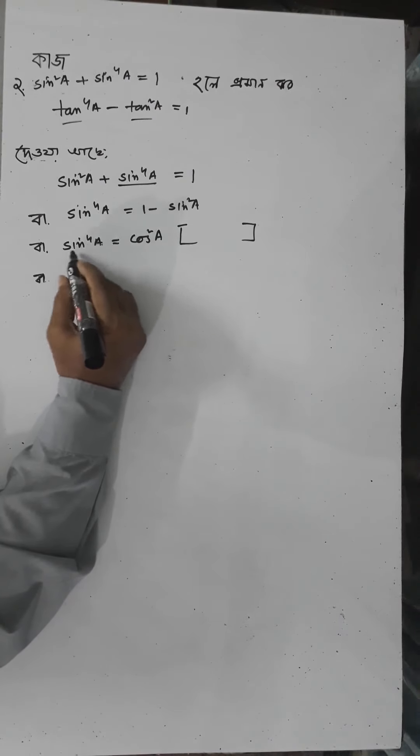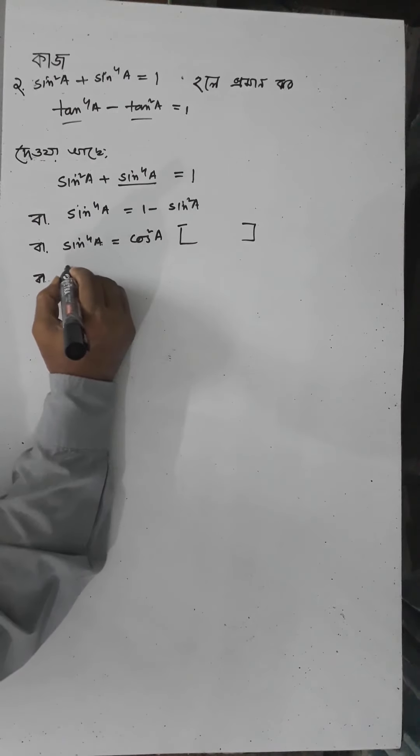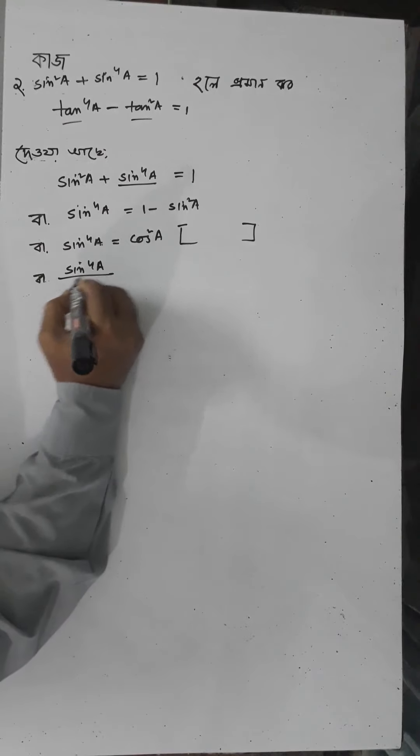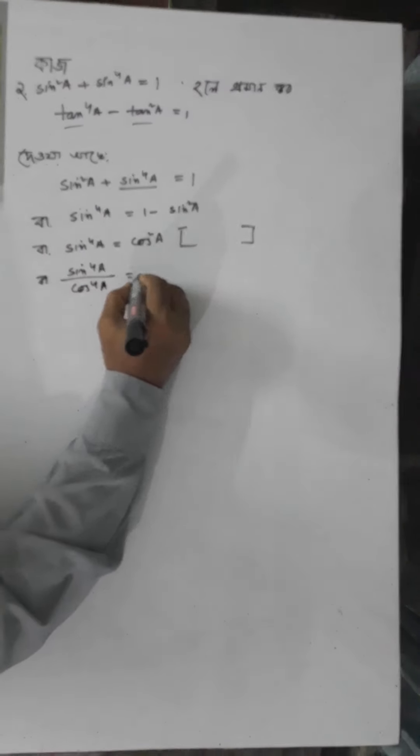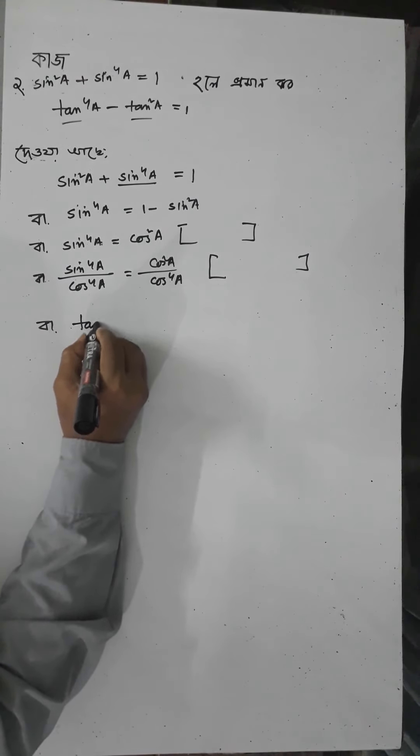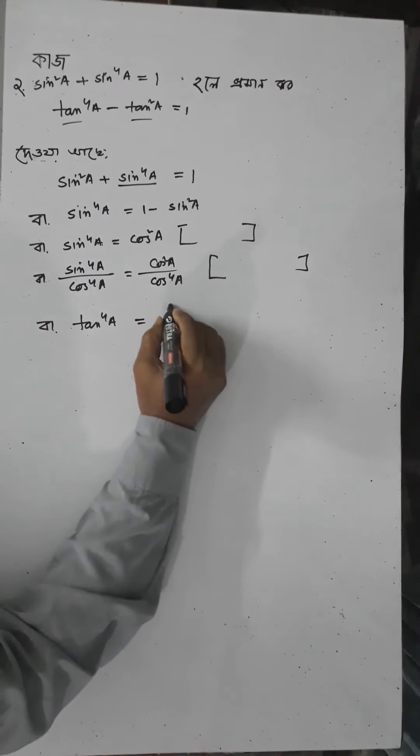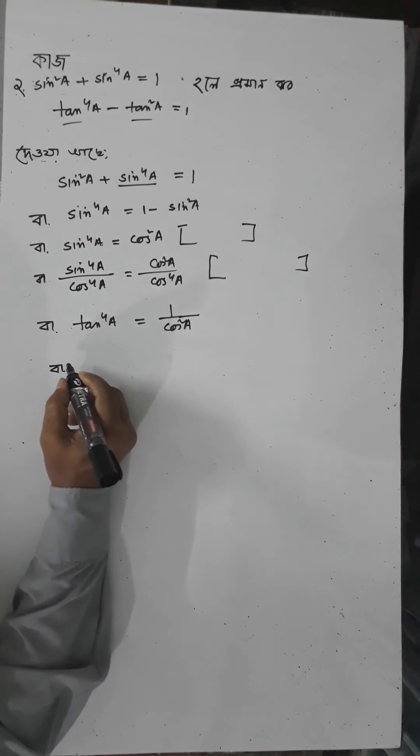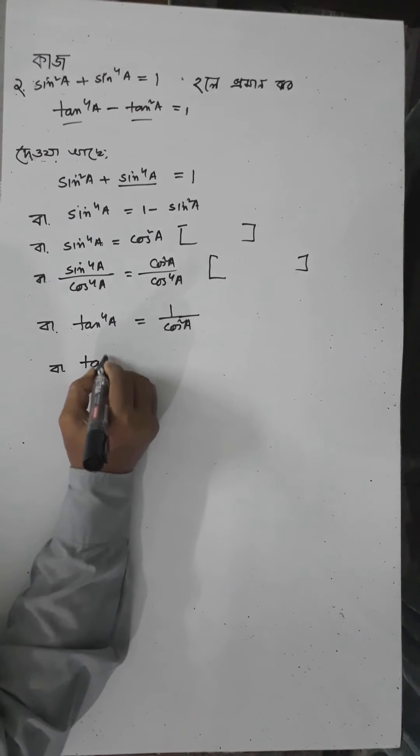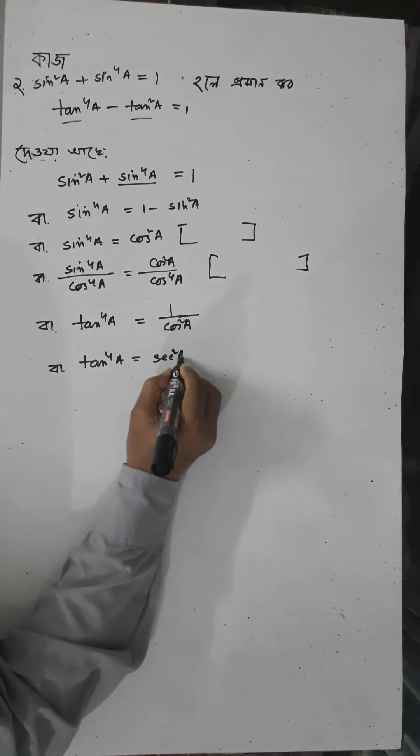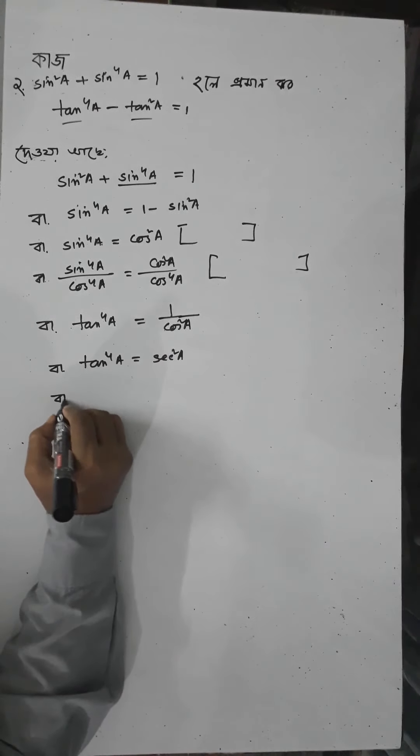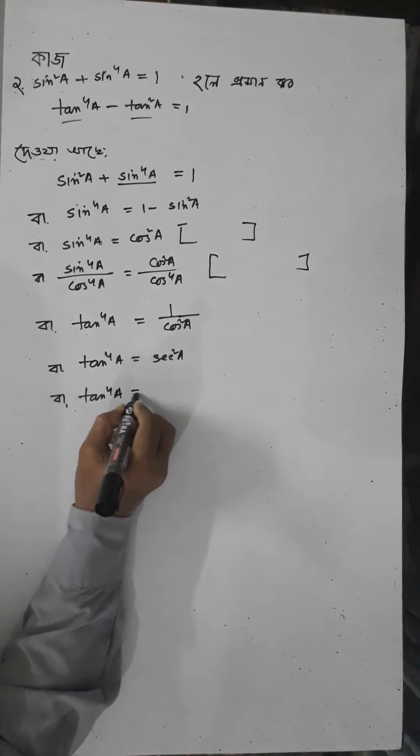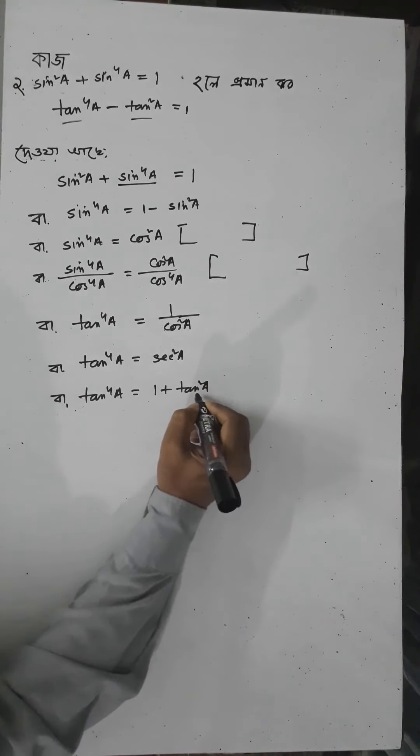cos⁴a divided by sin⁴a equals cos²a divided by cos⁴a. tan⁴a equals 1 by cos²a, which is sec²a. tan⁴a equals sec²a, and sec²a is 1 plus tan²a.